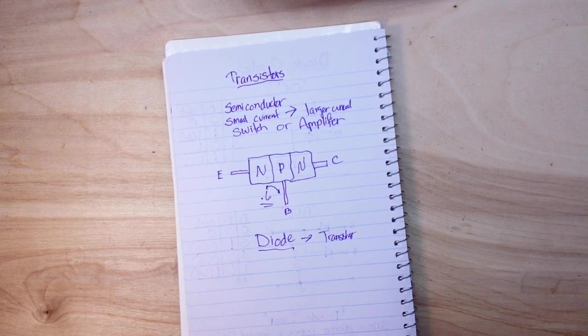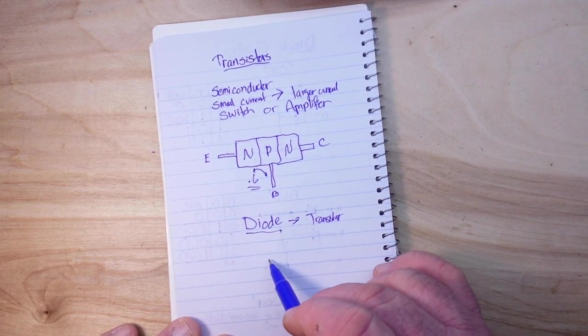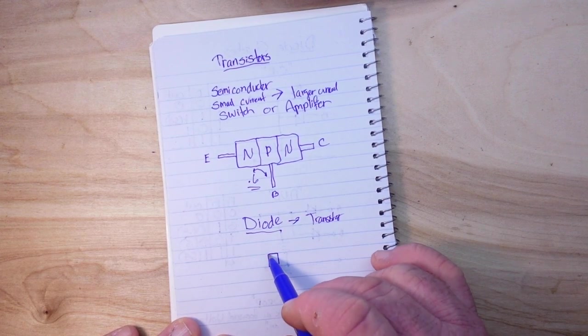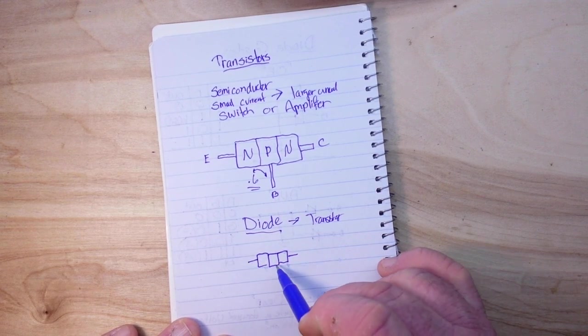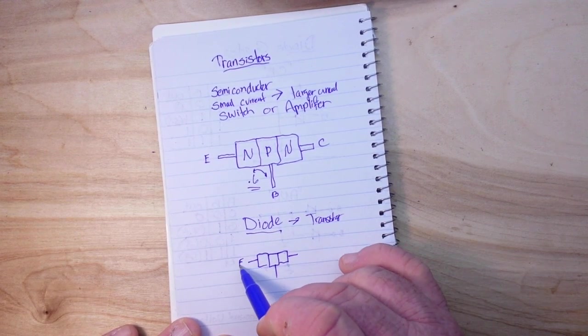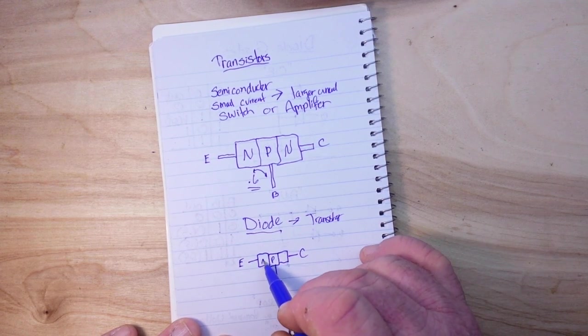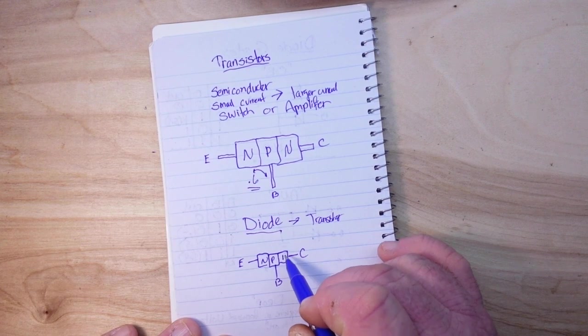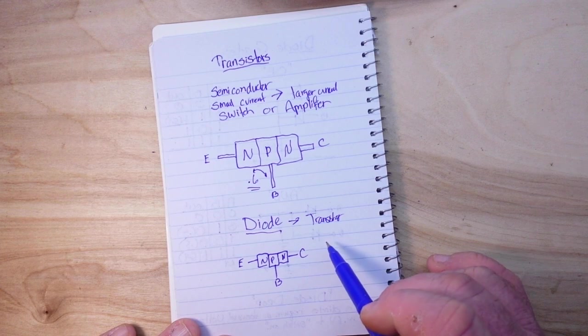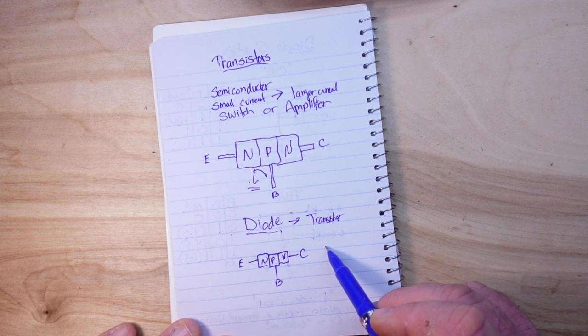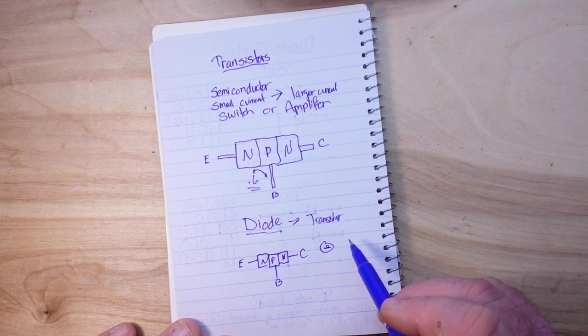So what happens is, again let me draw another representation of our NPN transistor here. Our emitter, our collector, and our base. So if we have our collector hooked up to say a light bulb going to positive voltage something like this.